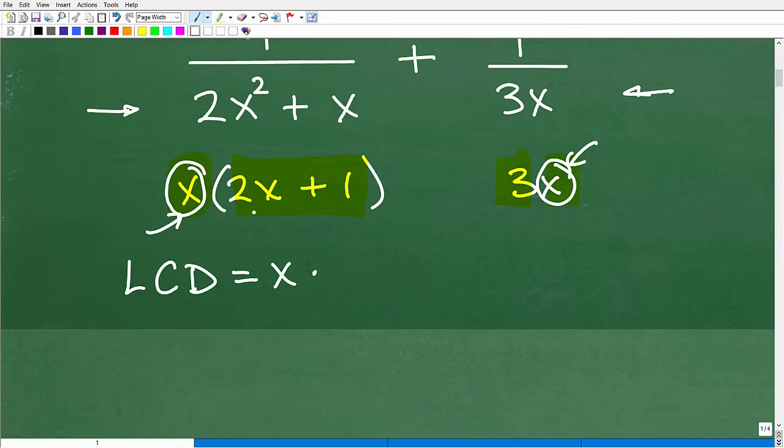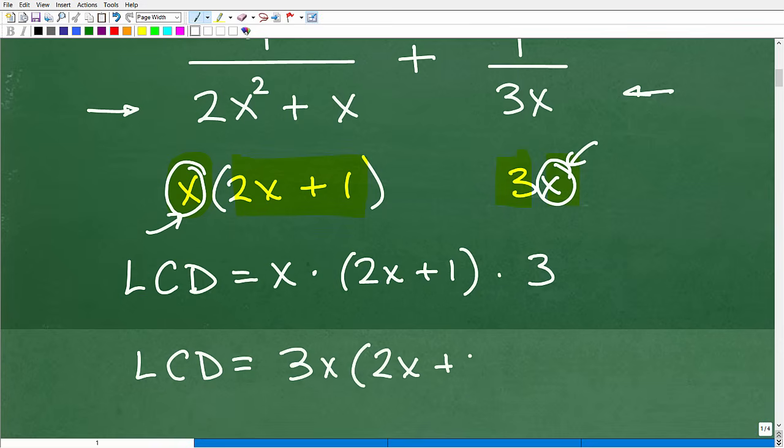Then I have this 2x plus 1. I'm going to have to have that in my LCD because that's a unique factor. And then I have to have my 3 in my LCD as well. So what I can do now is just multiply all this stuff together. So let's do it this way. 3 times x, that's 3x. And then we can multiply by 2x plus 1. And when I multiply, this could be 6x squared plus 3x. That would be my lowest common denominator.